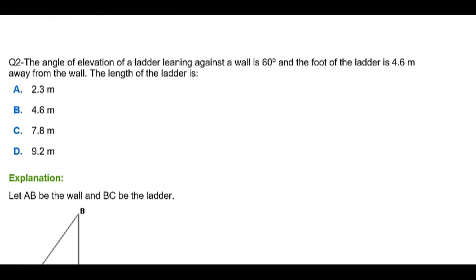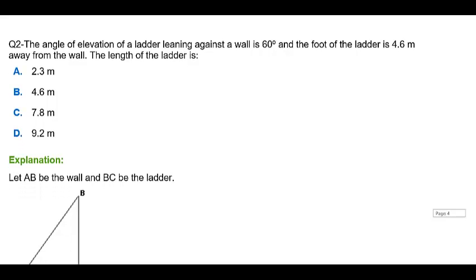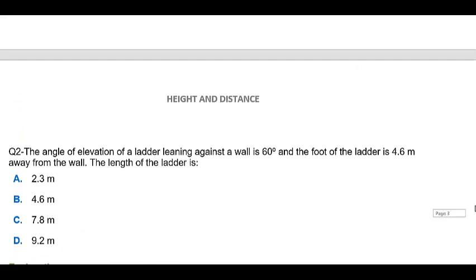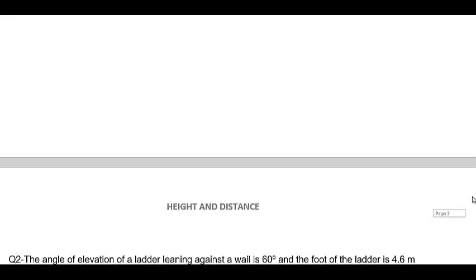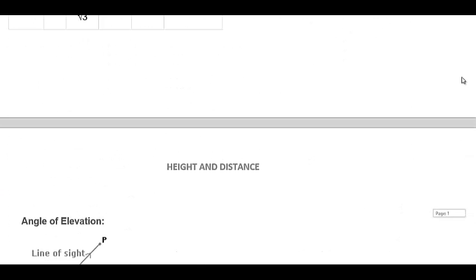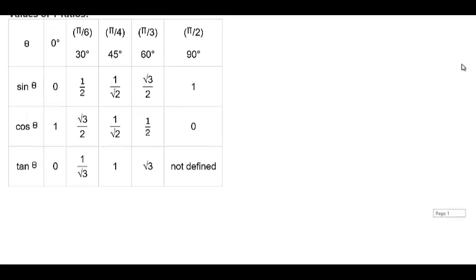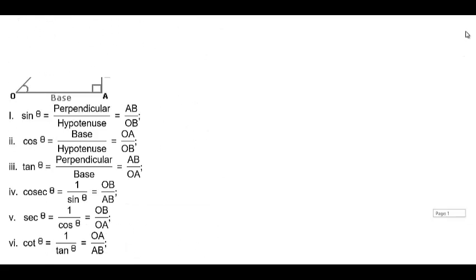This is how you have to proceed with height and distance problems — by knowing all the trigonometric ratios properly with all their values. If you know all those parameters and their values, it is very easy to solve height and distance problems. Thank you very much for watching. Hope this video is helpful for you.